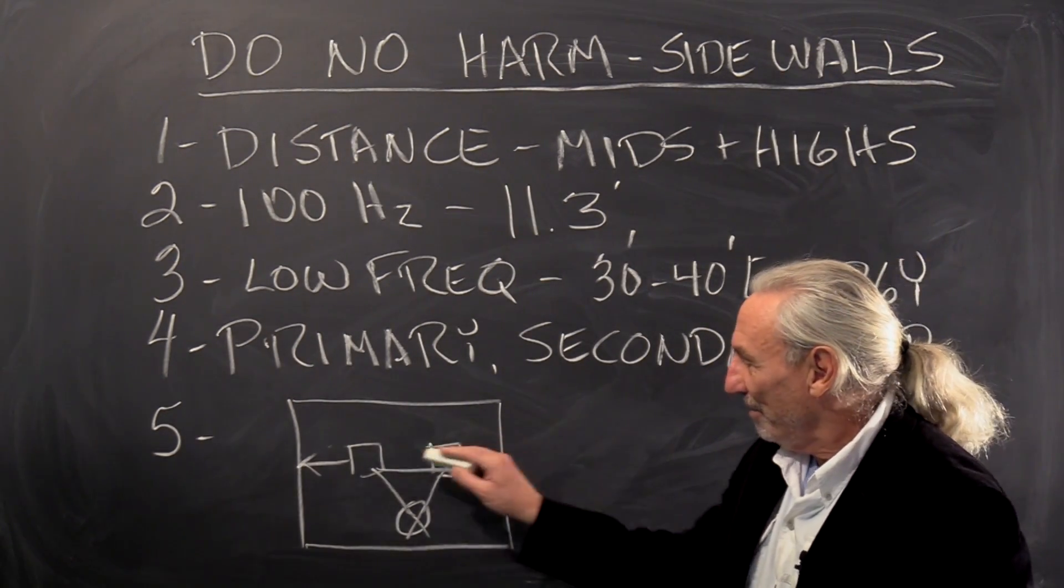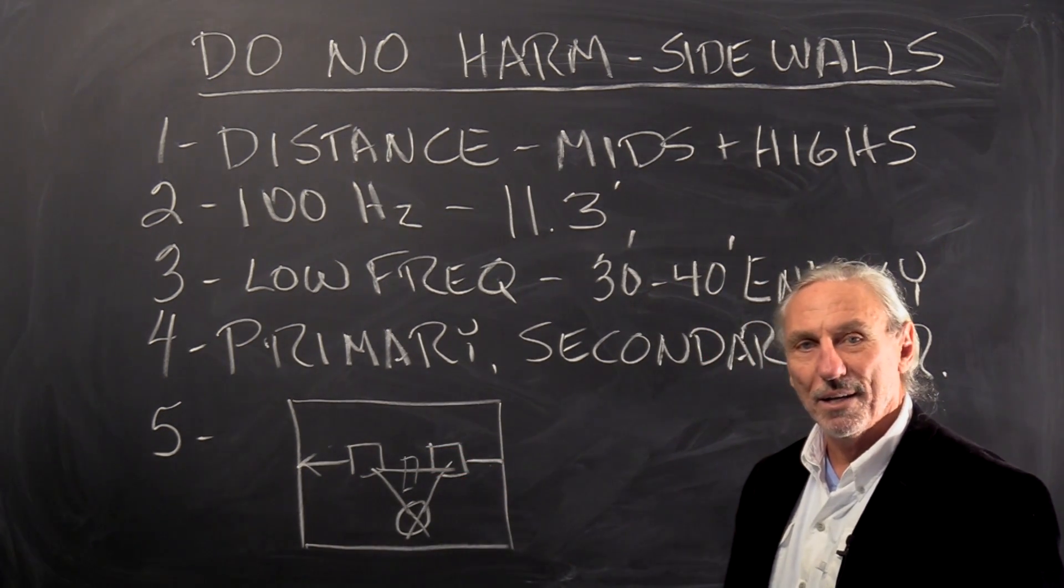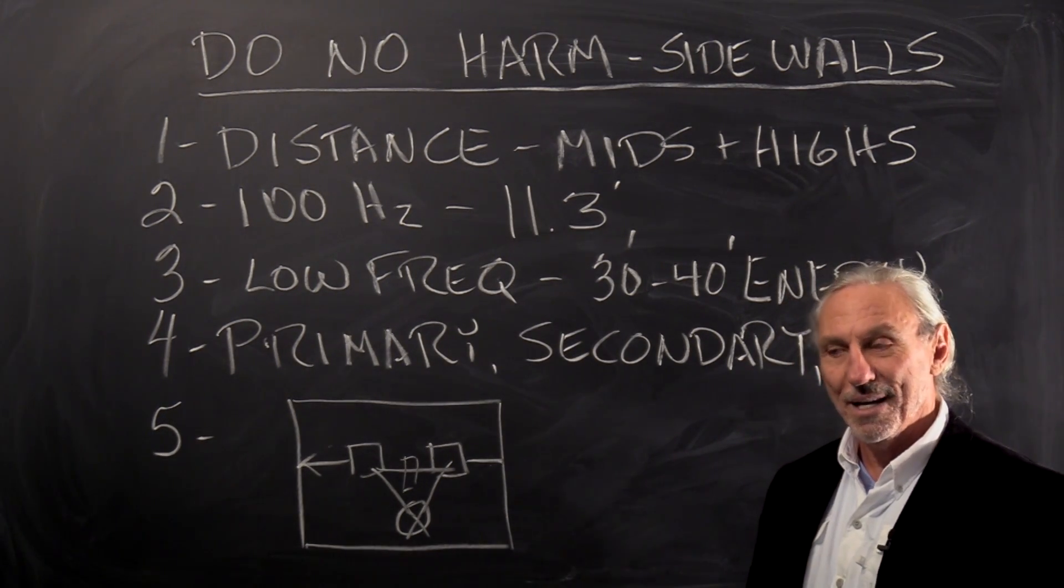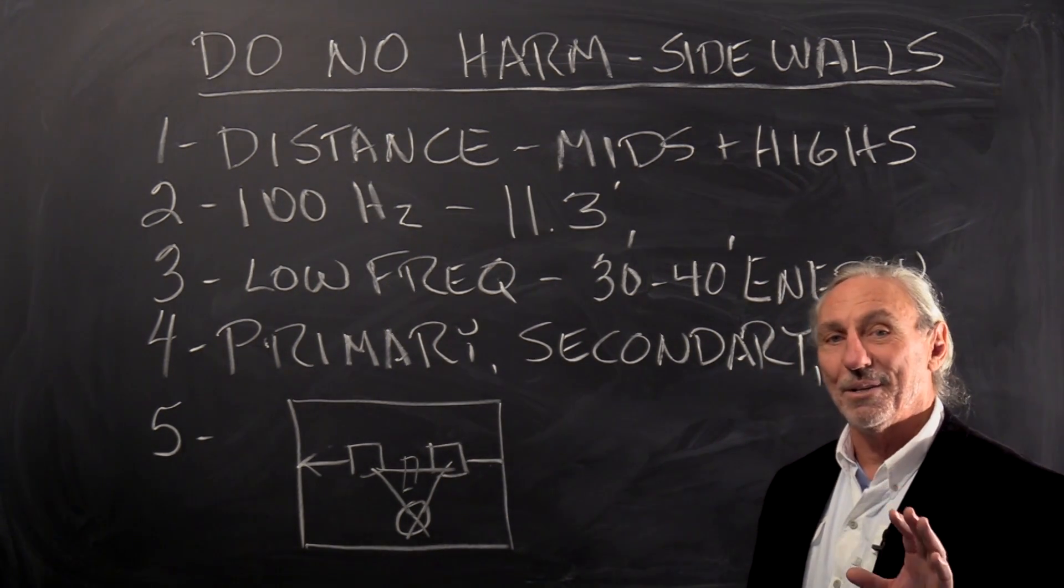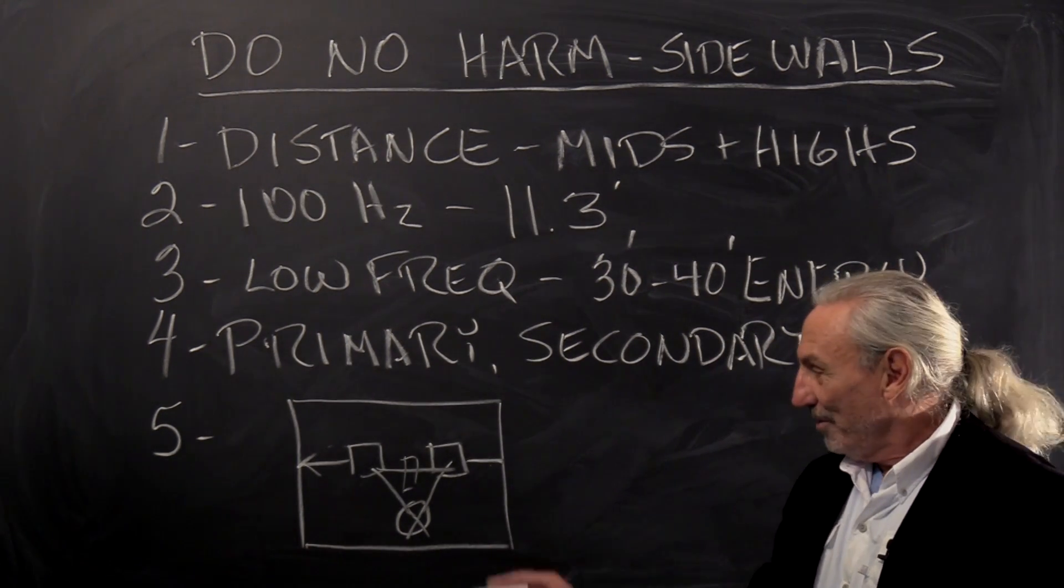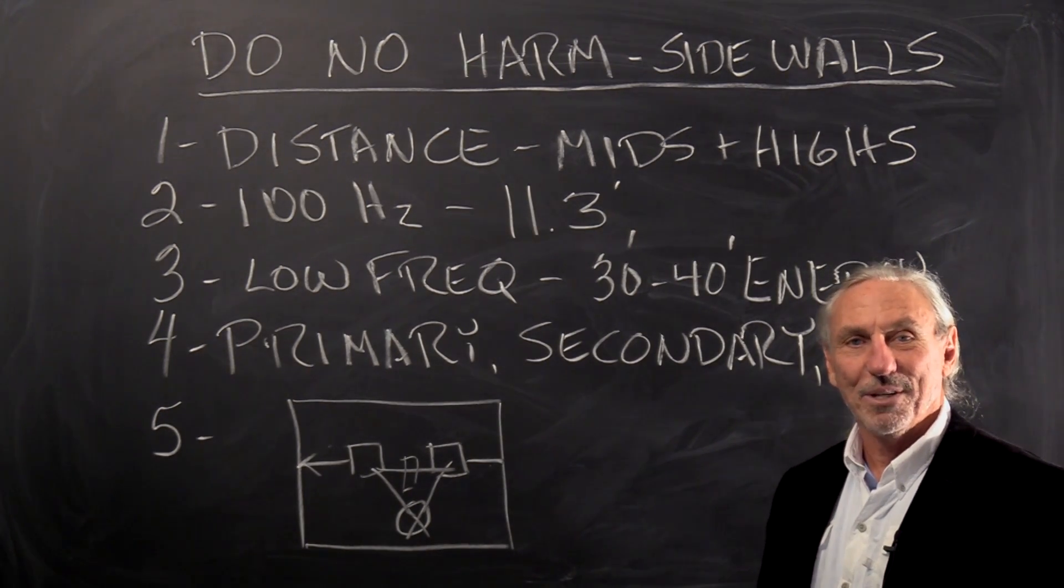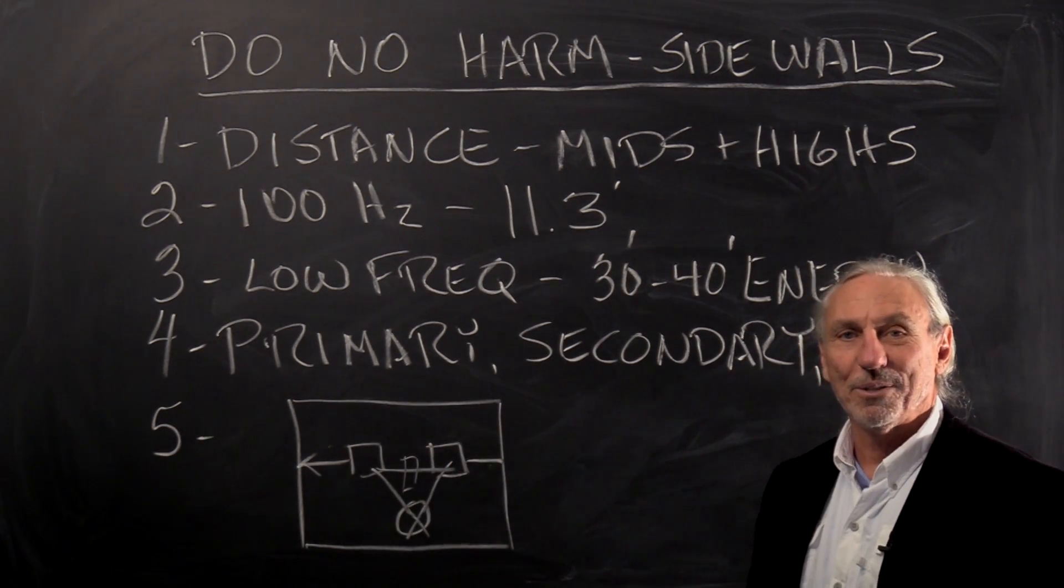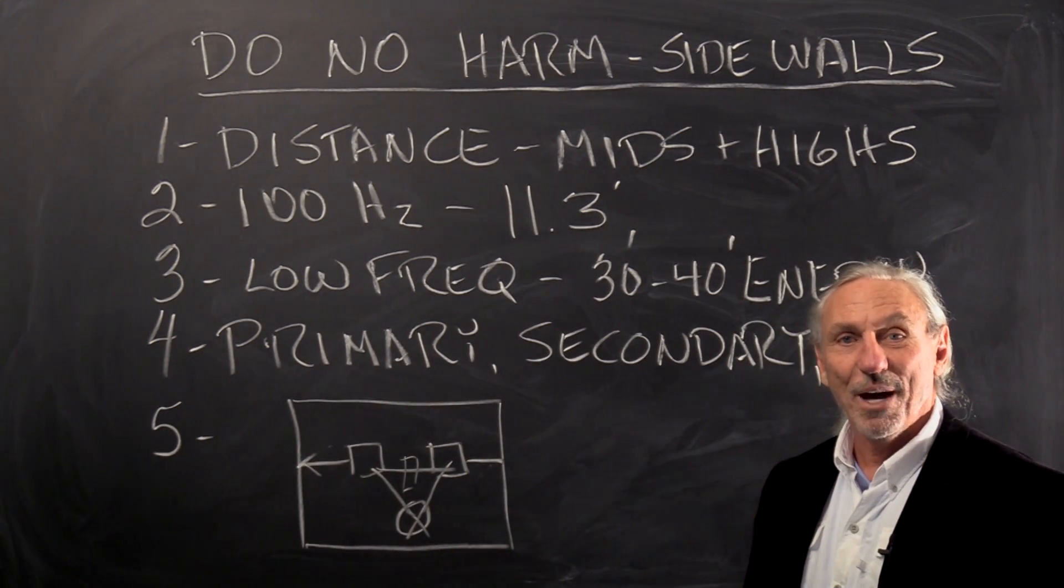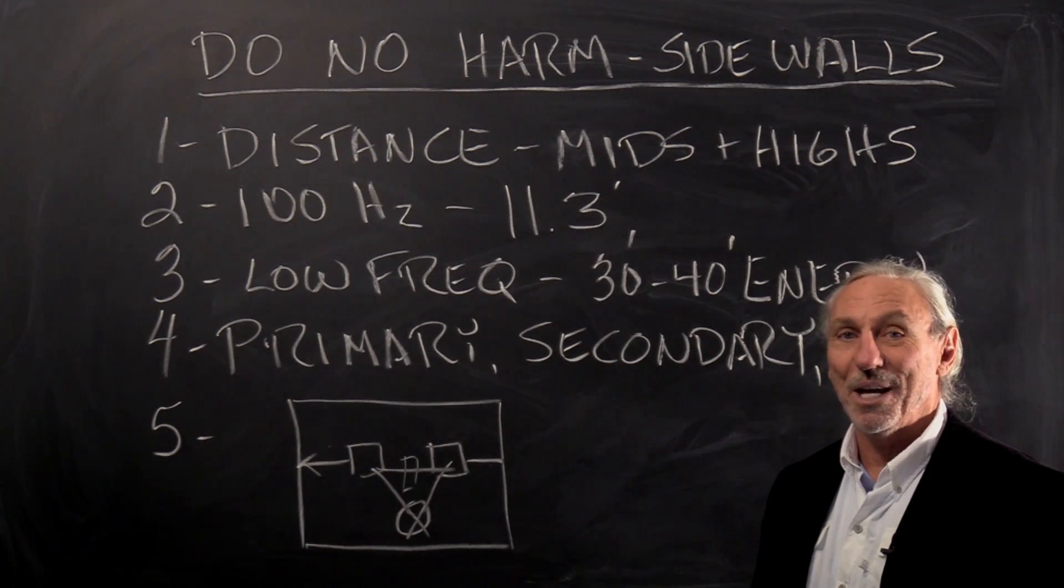The reflection from the sidewall contributes to that center image we all like, whether you're mixing or listening to two-channel playback. It's that mysterious thing where two speakers produce this center image that has nothing to do with the two speakers. If you get the room treated correctly, the two speakers kind of disappear acoustically, so you're right there on stage.